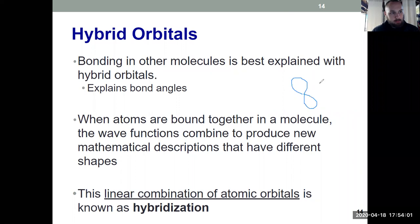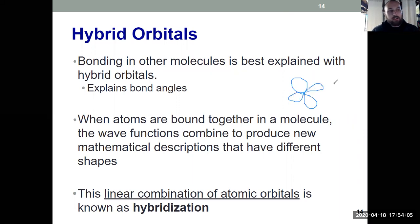There's a couple of P orbitals on the oxygen there that are 90 degrees to one another. So we would assume when they connect to hydrogens, that those hydrogens would have a bond angle of 90 degrees, because P orbitals are perpendicular to one another.